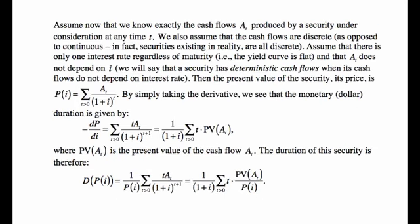Now assume we have a security for which we exactly know its cash flows — A_t at time t in the future, where there is a collection of future times t when those cash flows are positive. We assume the cash flows are discrete. Only one interest rate is assumed, and A_t does not depend on the interest rate. This is commonly called deterministic cash flow, because the payments are determined and don't depend on the interest rate.